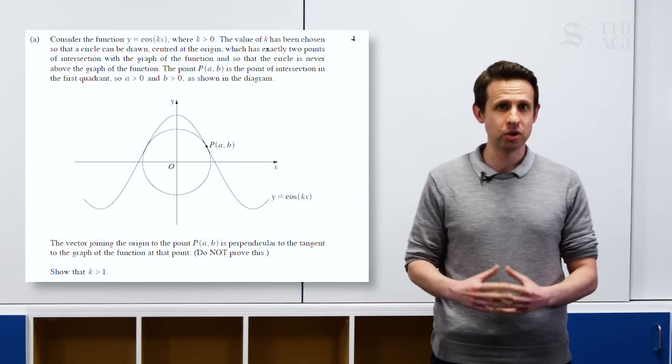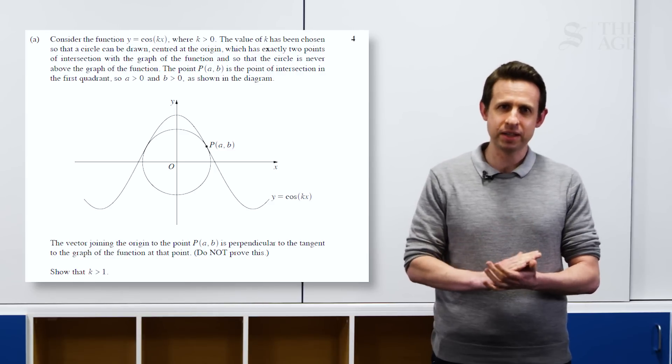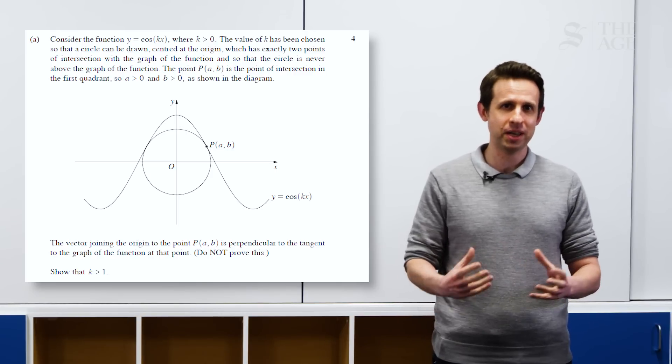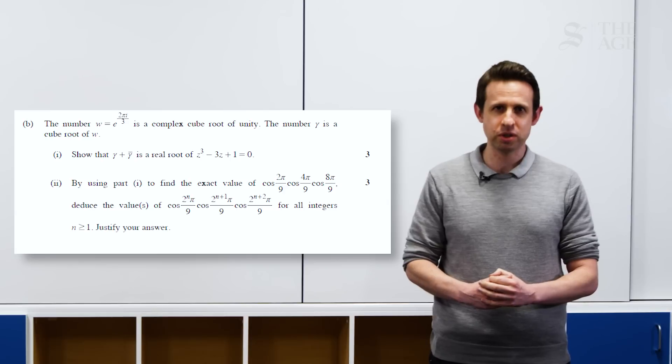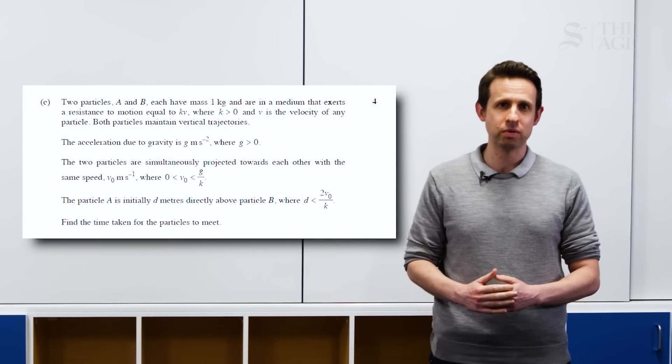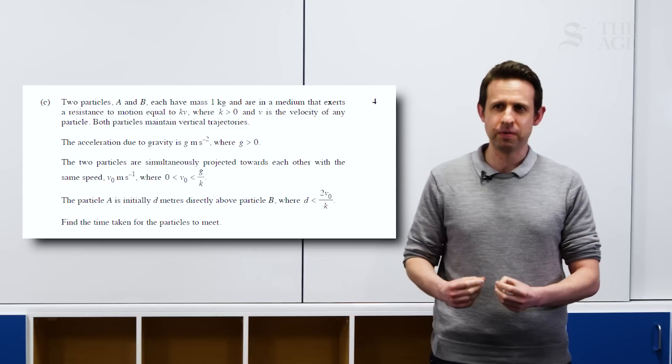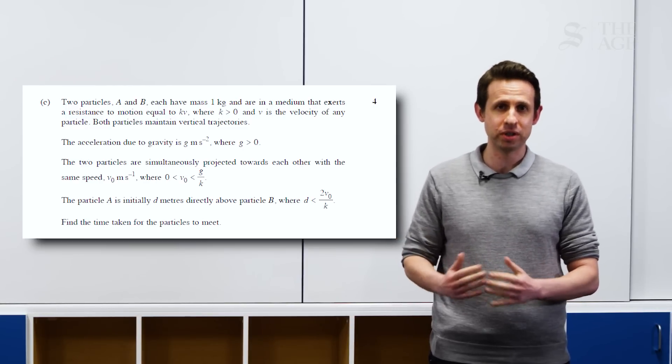16A was a question that had elements of a lot of different topics. There was some differentiating trigonometry, vectors, as well as some coordinate geometry from our junior school could come back into that question. 16B was worth six marks in total. It was a complex numbers question involving a cube root of a complex number. And 16C is the one that our student Bowen has done. That was a mechanics question involving resisted motion, which was quite challenging because there was just a lot of very, very fine details that students have to get perfect in every single step of working in order to get to the right answer.